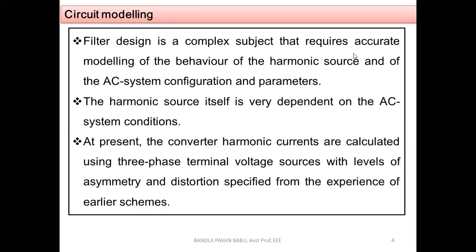The harmonic source itself is very dependent on AC system conditions. If the AC supply feeding the HVDC is operating normally — with constant voltage and frequency — there is no problem. However, if the AC is not proper, harmonic levels increase and harmonic suppression becomes complex, because filters designed to eliminate particular harmonics will be affected if the AC system's voltage and frequency are not constant.